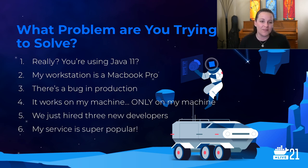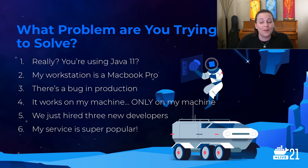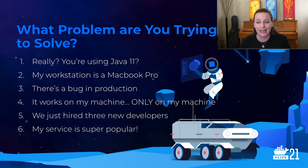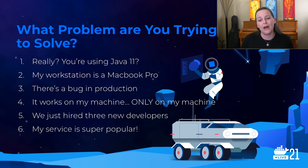Number five: we just hired three new developers. That consistency from step four will make onboarding team members a lot easier. Number six: my service is super popular. That's one of the biggest reasons for moving it to modularity and to containers — utilizing the strategies of cloud native deployment to quickly scale your application as needed.